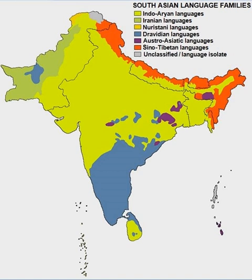The oldest surviving Sanskrit grammar is Panini's Ashtadhyayi, an eight-chapter grammar, dating to c. the 5th century BCE. It is essentially a prescriptive grammar, i.e., an authority that defines correct Sanskrit, although it contains descriptive parts, mostly to account for Vedic forms that had already passed out of use in Panini's time.